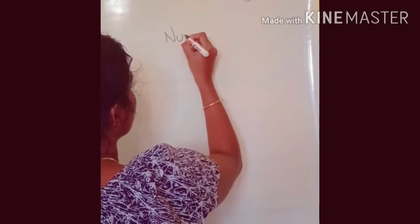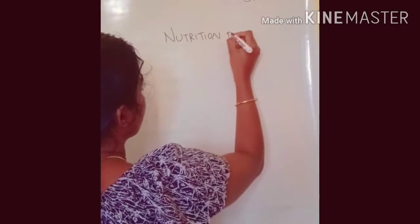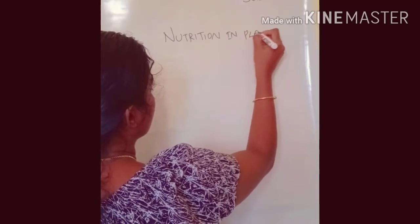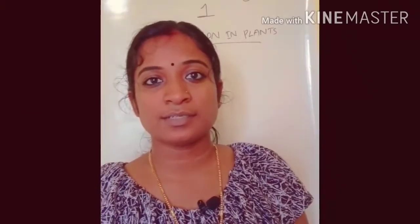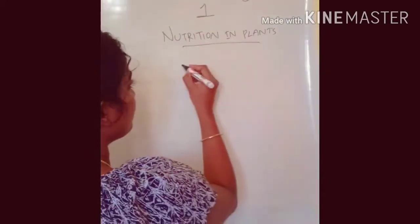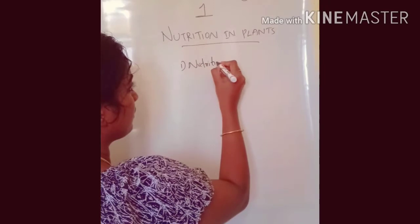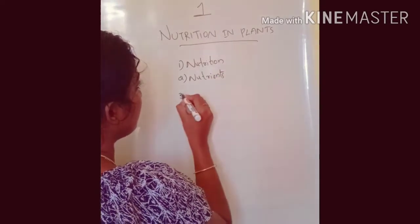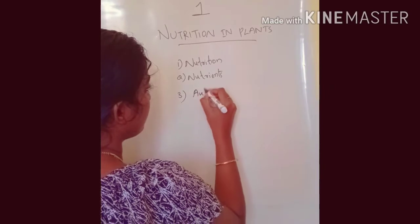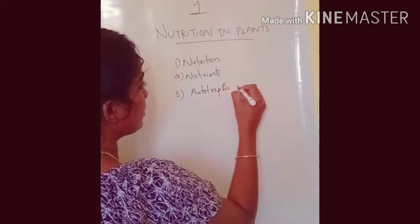Hello, my dear students. Today we will discuss lesson 1 from your 7th standard science textbook, that is Nutrition in Plants. It is the first lesson from your science textbook. In this chapter, you need to learn about nutrition, then nutrients, then types of nutrition — that is autotrophic nutrition.